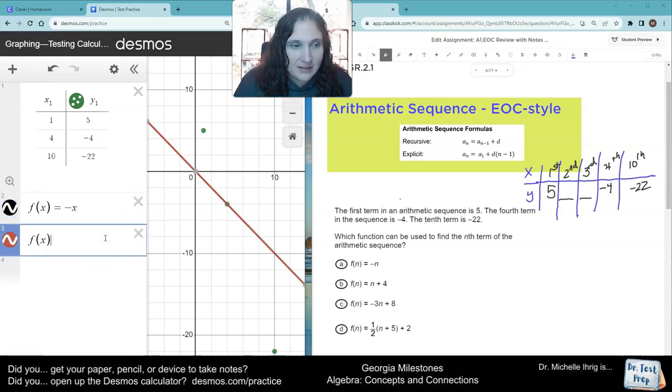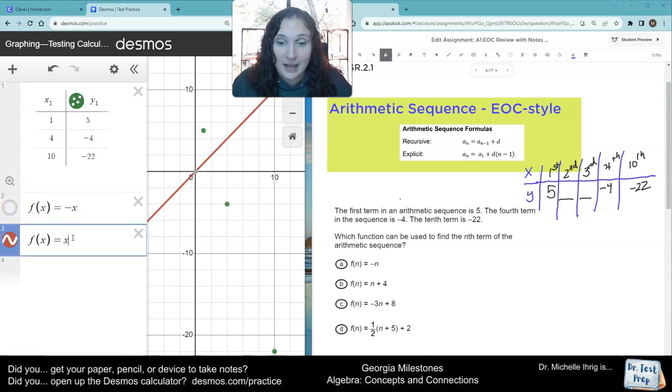Then we're going to put in f of x, you can still use f of x, it's totally fine. I'm going to click this black circle so we don't get confused. Now we're on choice B. And now we're going to put in, instead of n, we're writing x. x plus four. Well, that doesn't go through all the points, so it's not the second one.